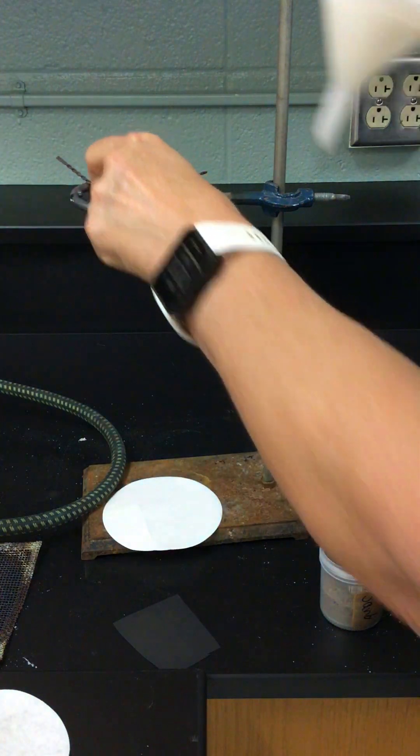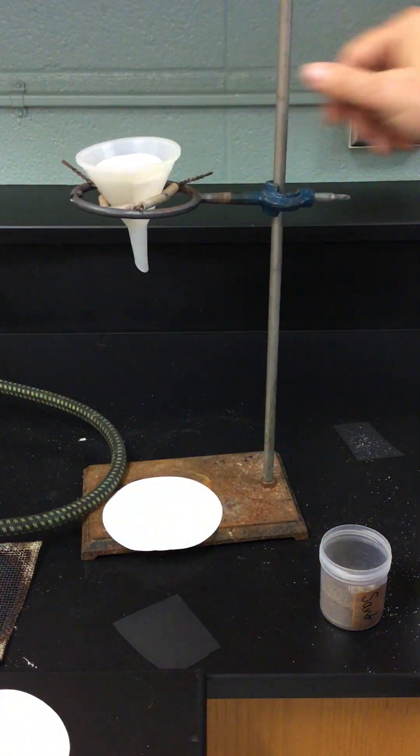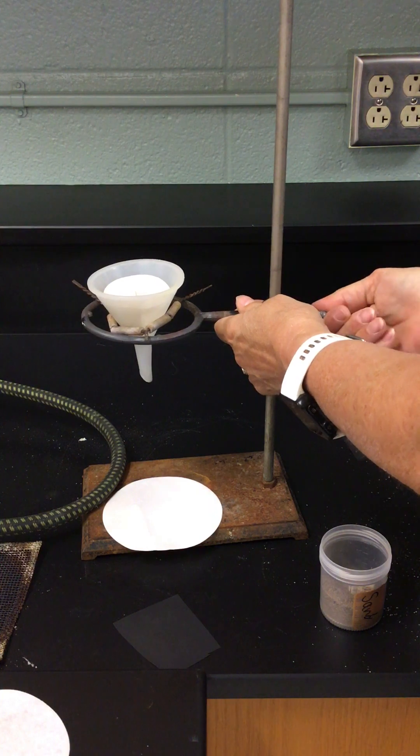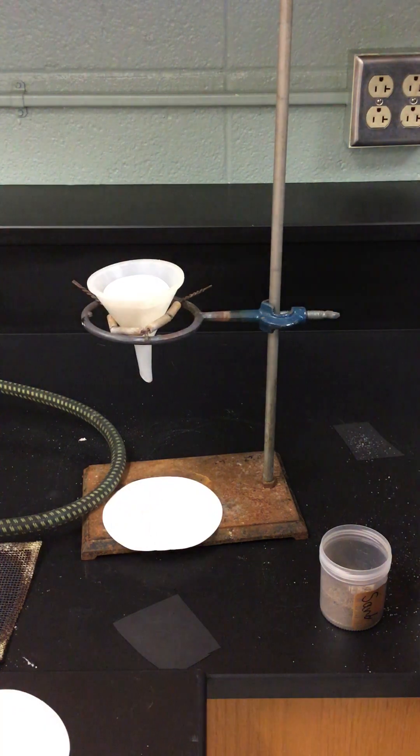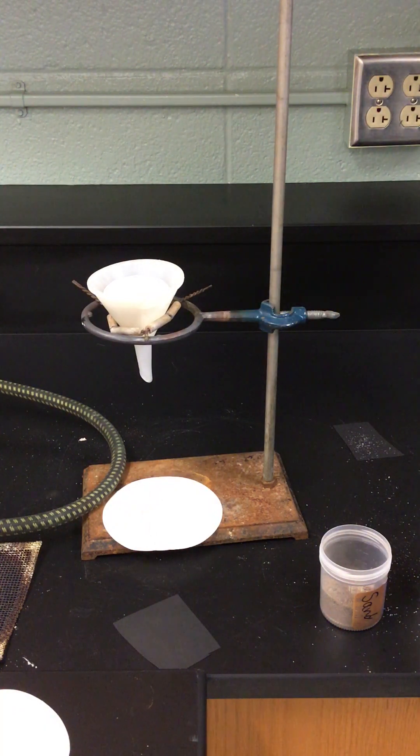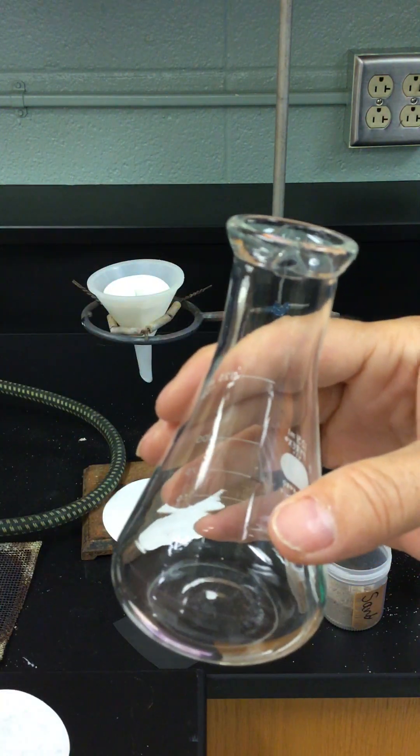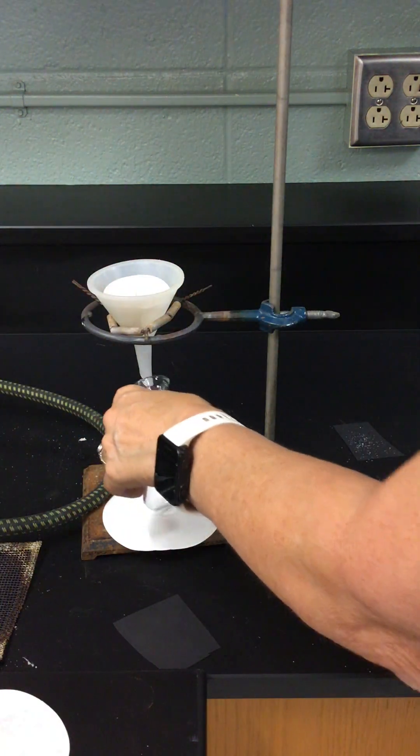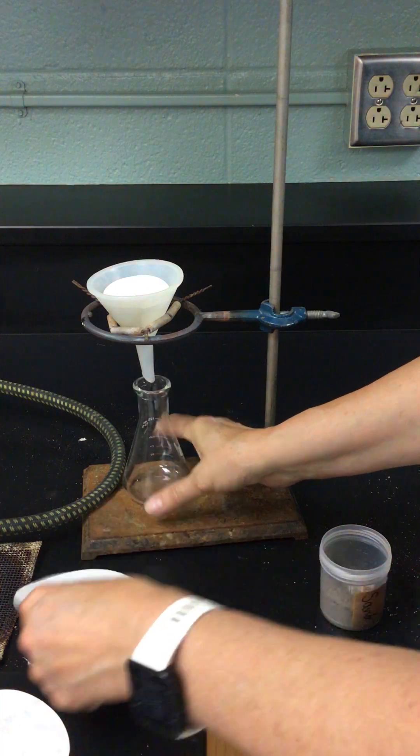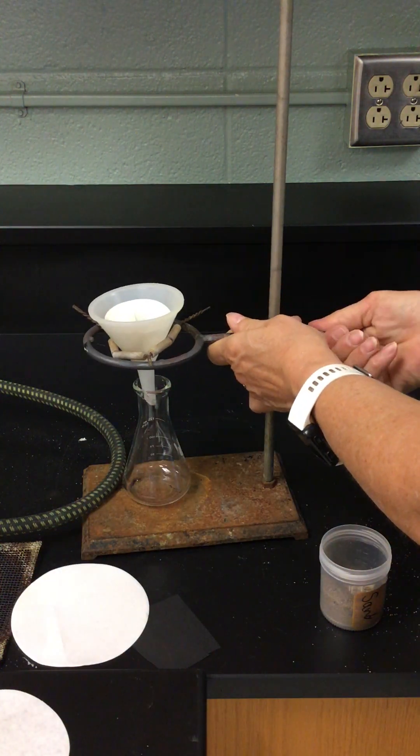Then we put it in our ring. My ring isn't big enough so I brought a clay triangle over and I'm going to get this a little lower. We'll collect it in this Erlenmeyer flask. I'm going to get this down so it doesn't drip all over.